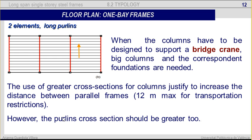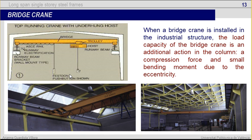When the columns have to be designed to support a bridge crane, bigger columns and the corresponding foundations are needed. The use of greater cross-sections for columns justifies increasing the distance between parallel frames. 12 meters is the maximum distance, and the reason is transportation restrictions. In this case, the port lengths cross-section should be greater as well because of this length. When a bridge crane is installed in an industrial structure, the load capacity of the bridge crane is an additional action on the column — a compression force and a small bending moment due to eccentricity.